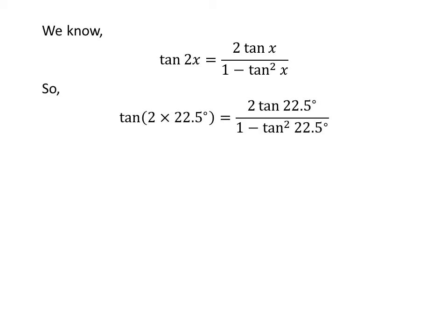Let us plug 22.5 degrees in place of x in the above identity. So tangent of 2 times 22.5 degrees is equal to 2 times tangent of 22.5 degrees upon 1 minus square of tangent of 22.5 degrees.